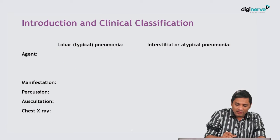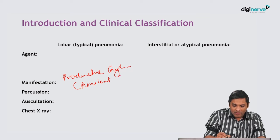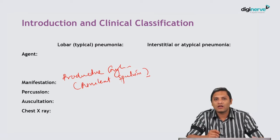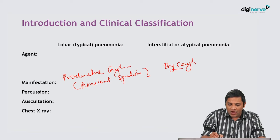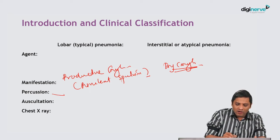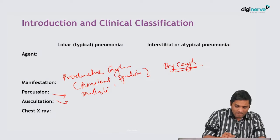Lobar pneumonia is characterized by a productive cough. You will have purulent sputum produced from the lungs. On percussion, you will get a dull note. In case of lobar pneumonia on auscultation, you will be noticing consolidation. In contrast, interstitial pneumonia presents with a dry cough without expectoration, and there will be no dull note on percussion.